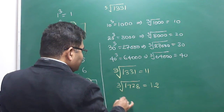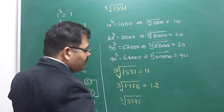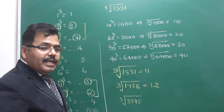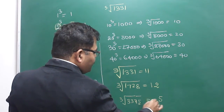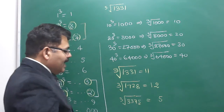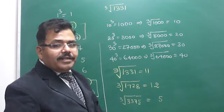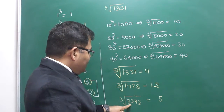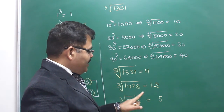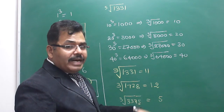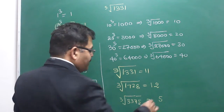Let us consider another example: 3375. The unit place is 5, which ensures that the unit place of the cube root must be 5. This number lies between 1000 and 8000, so the answer must lie between 10 and 20. The number between 10 and 20 whose unit place is 5 is 15. So the answer is 15.